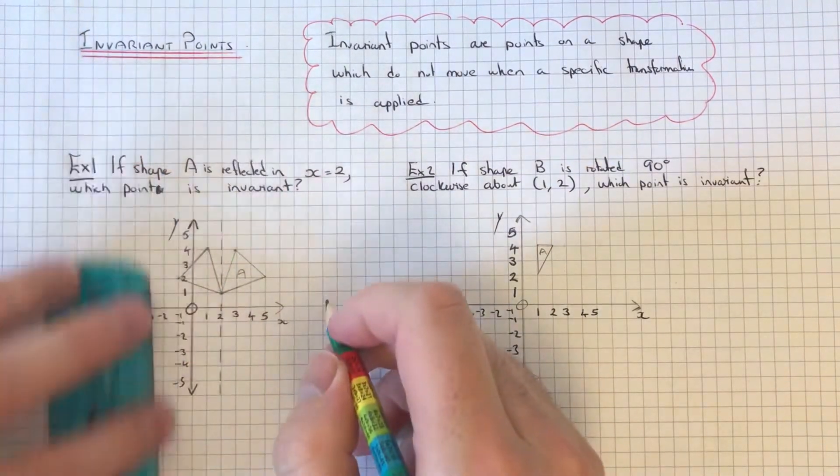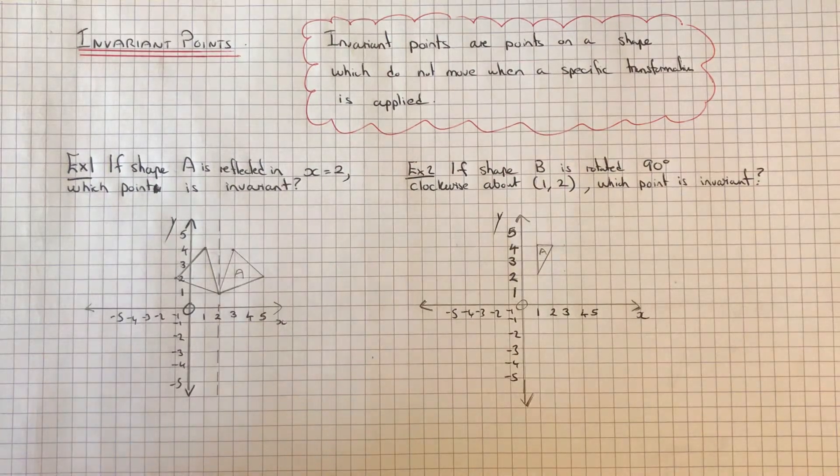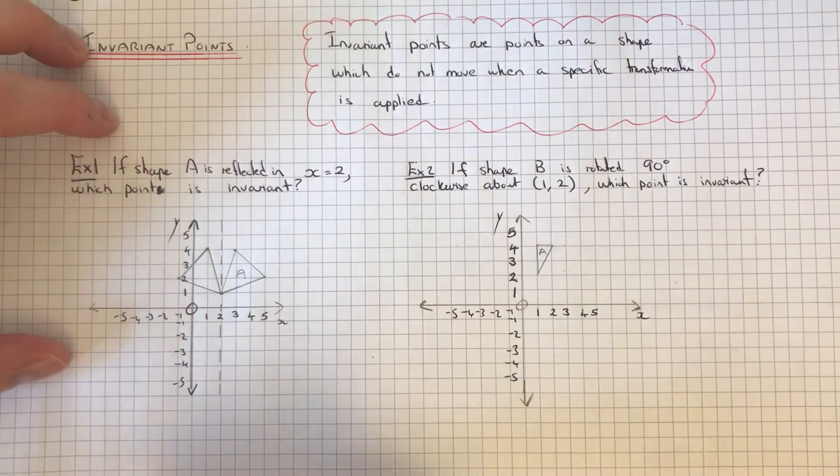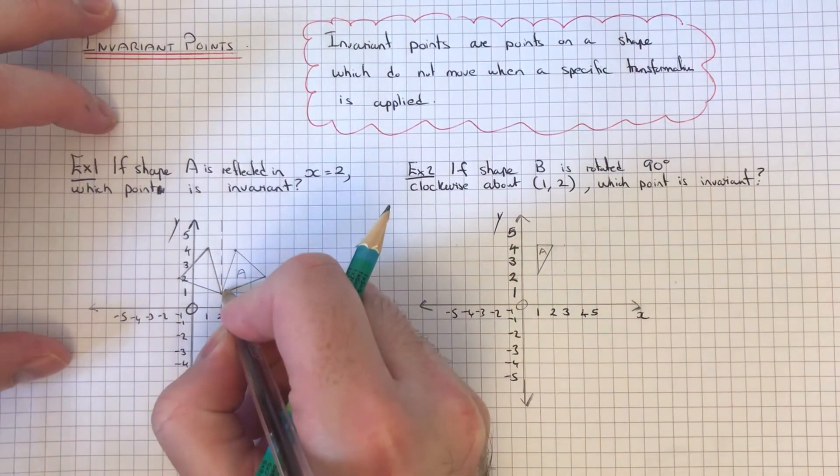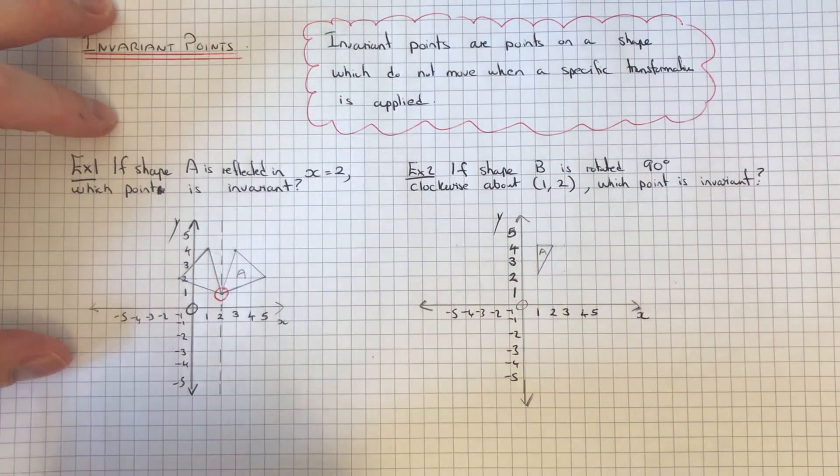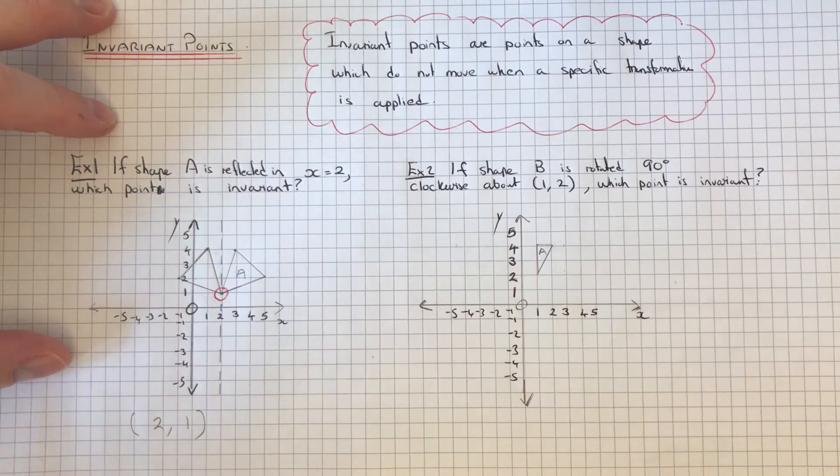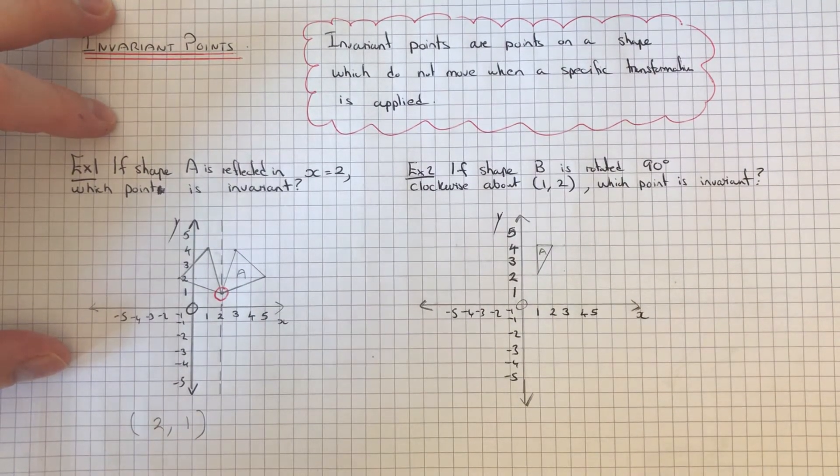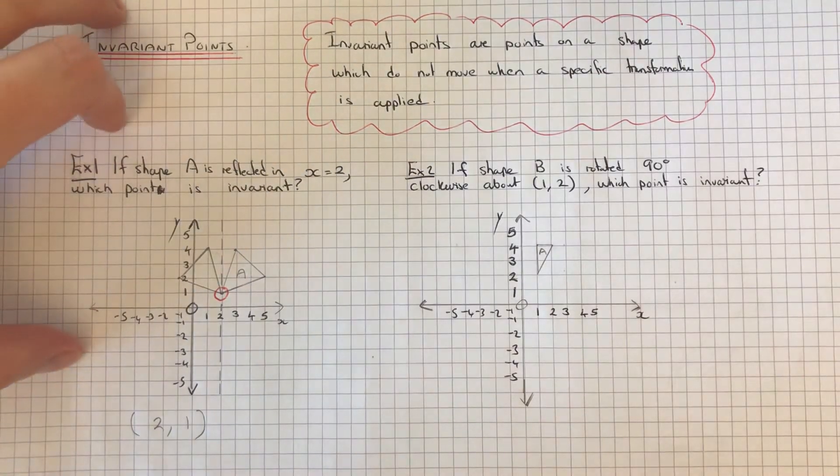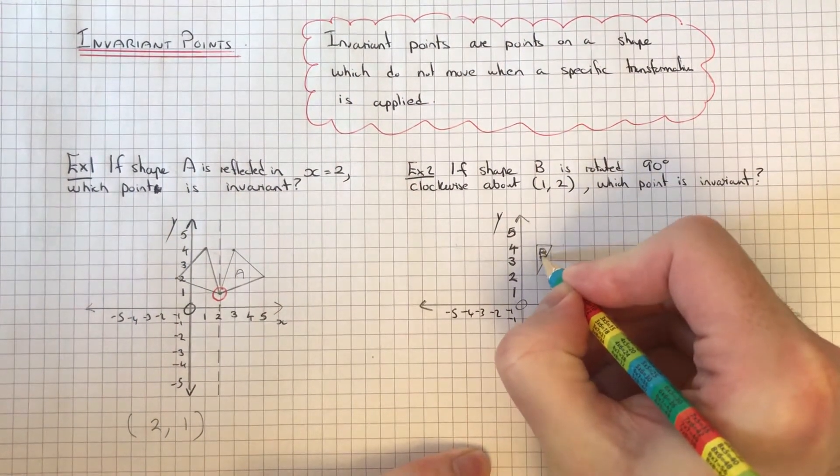So all we need to do then is look for the point which didn't move under the reflection. The point which stayed in the same place was this one here, so the coordinate of this point is (2, 1). This is the invariant point. Let's look at example 2 then. Shape B is rotated